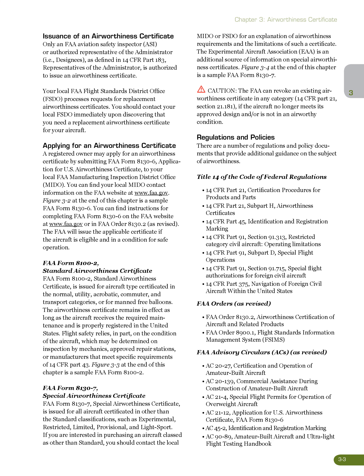FAA Form 8130-7, Special Airworthiness Certificate, is issued for all aircraft certificated in other than the standard classifications, such as experimental, restricted, limited, provisional, and light sport. If you are interested in purchasing an aircraft classed as other than standard, you should contact the local MIDO or FSDO for an explanation of airworthiness requirements and the limitations of such a certificate. The Experimental Aircraft Association, EAA, is an additional source of information on special airworthiness certificates. Figure 3-4 at the end of this chapter is a sample FAA Form 8130-7.